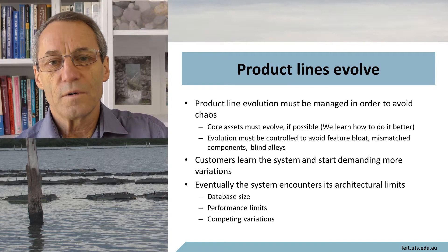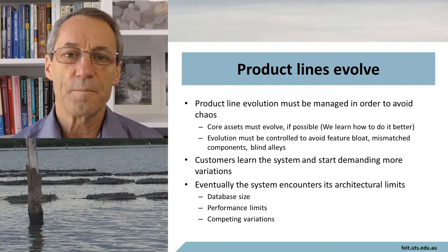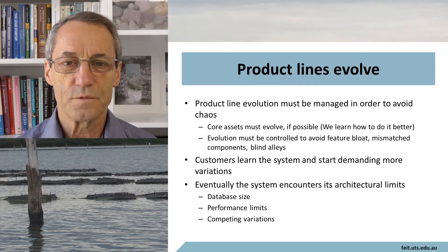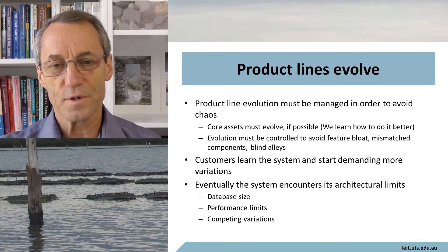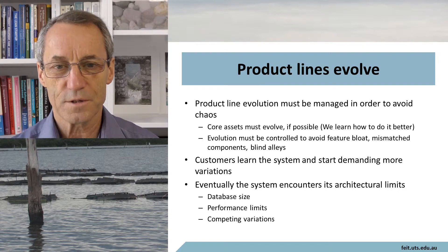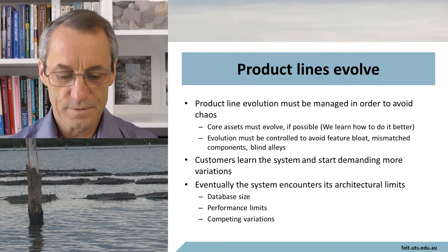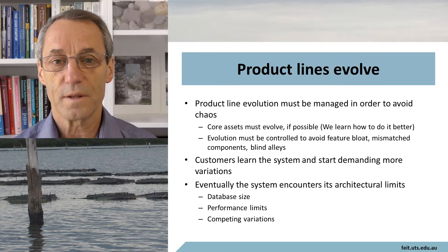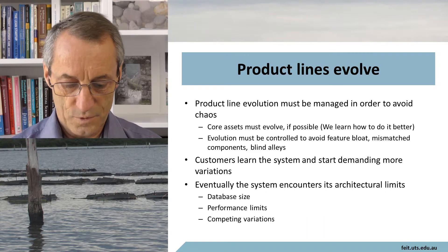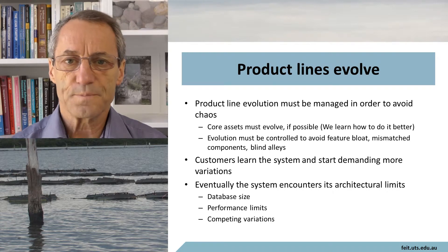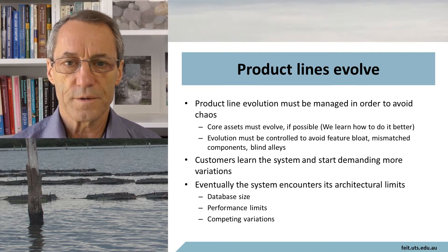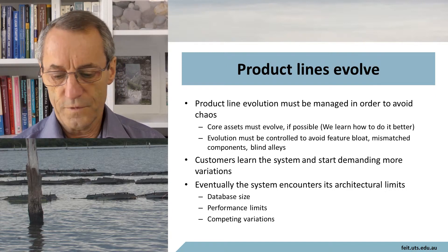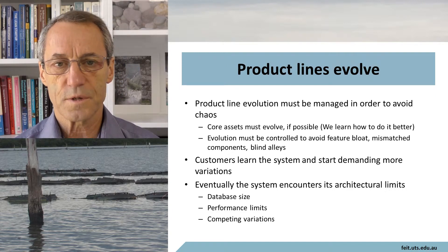Product lines do evolve. It would be unfortunate to think that once you've designed the product line, it never changes — it does evolve, and your architecture needs to anticipate that. Core assets must evolve where possible because we learn how to do things better over time. However, evolution must be controlled to avoid feature bloat, mismatched components, and blind alleys.